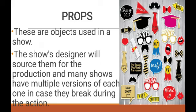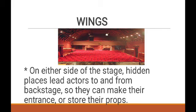Next are the wings — wings are on either side of the stage, near the stage, as hidden places that lead actors to and from the backstage. It is hidden — just at the back of the stage. The actor or actress comes to enter the stage from that place called wings. It is hidden from the audience, closed by a cover or cloth. At the back side, the actor and actress can change their dress or store some properties.